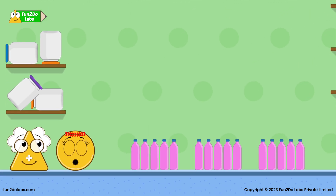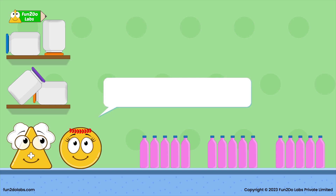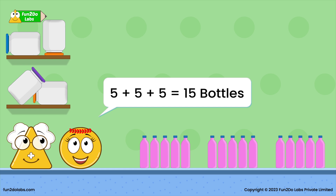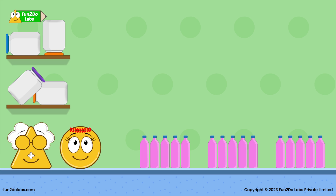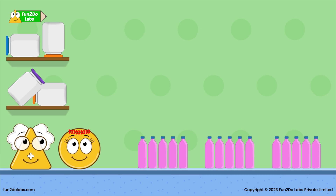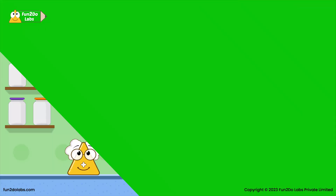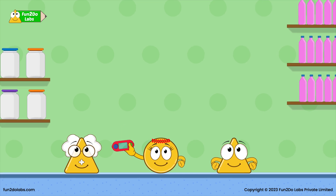Since there are three groups of five bottles, I could simply count five plus five plus five, which is fifteen bottles. To solve it even more quickly, I could multiply three times five. This is so useful. Sarah is thrilled and wants to use Mr. Multiply to clean up the other mess. They happily clean up the other mess, and Sarah's house looks neat and tidy now.